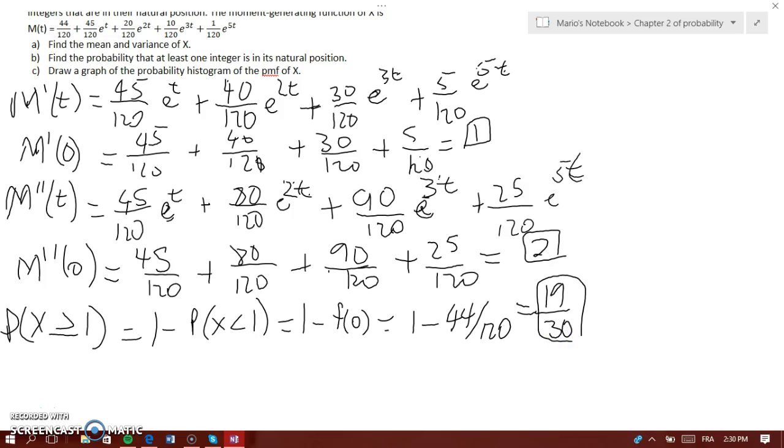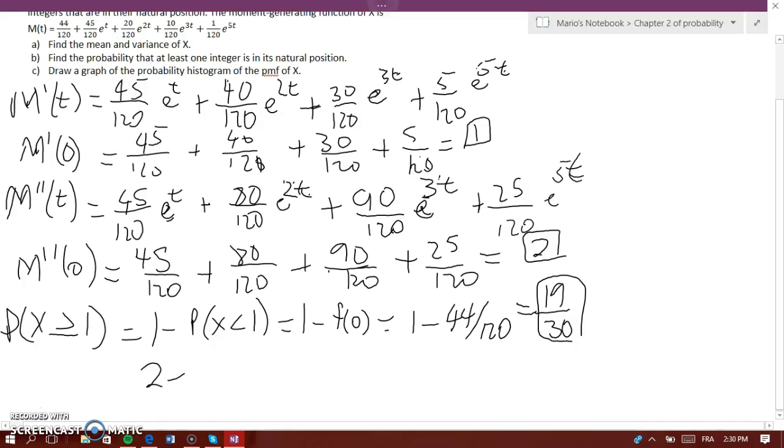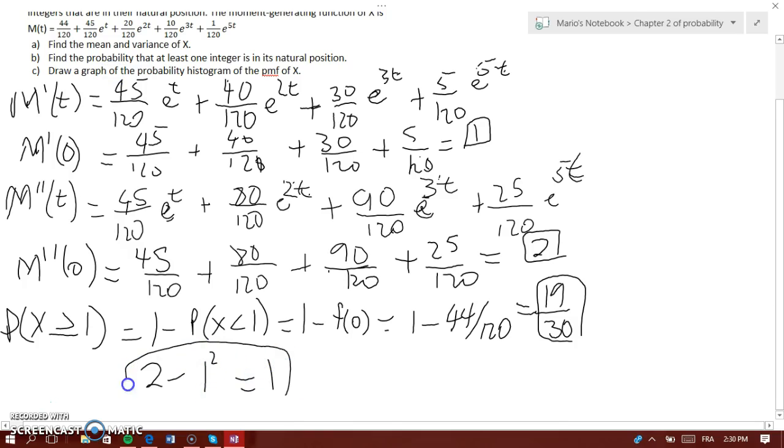Now, let's - just in case - let us write the, oh, variance. My bad, variance, we forgot the variance. The variance is the second derivative, which is 2, minus the first derivative squared. So minus 1 squared, which is equal to 1. So it's equal to 1. This is the variance.